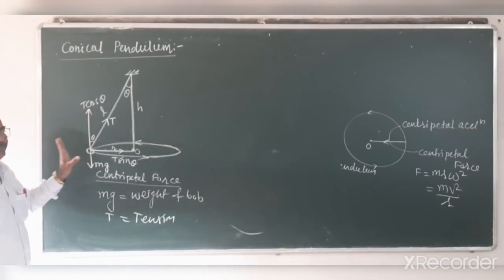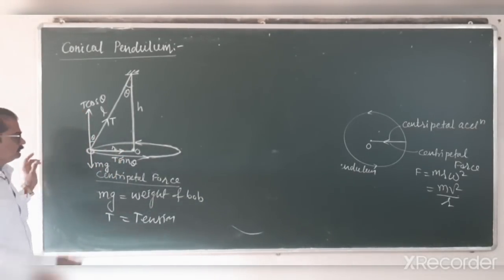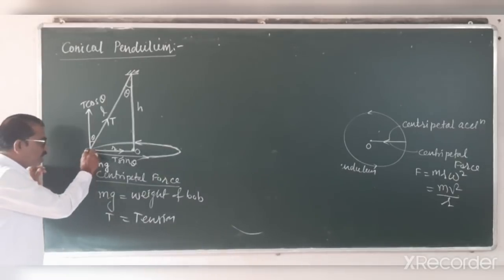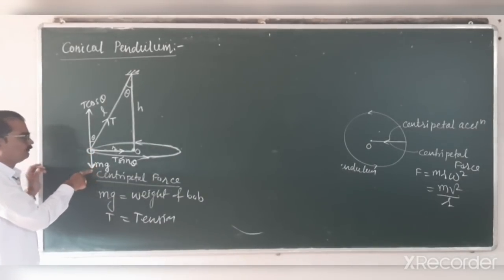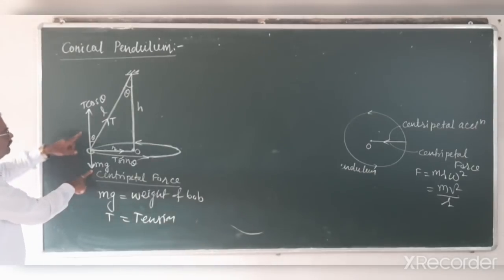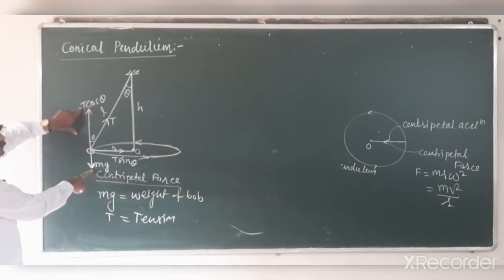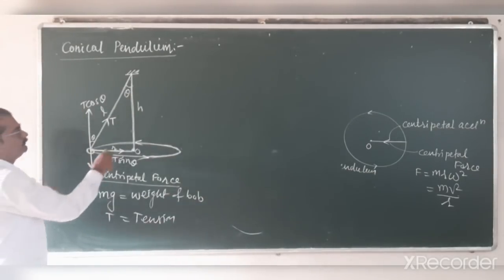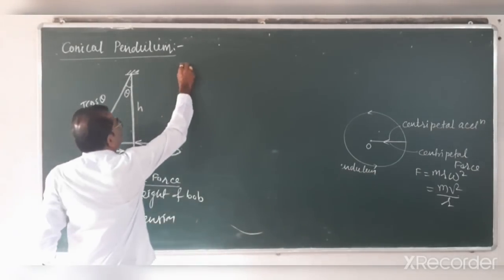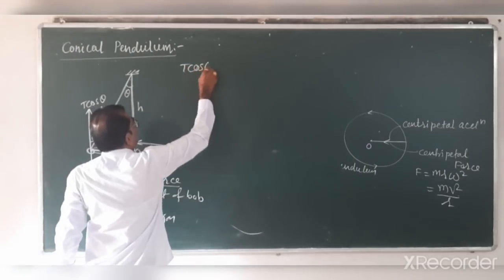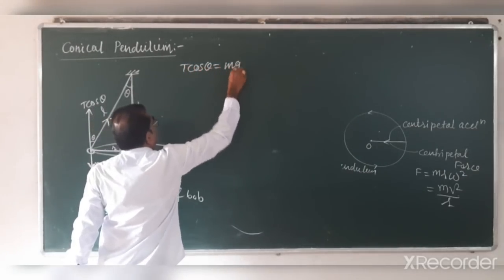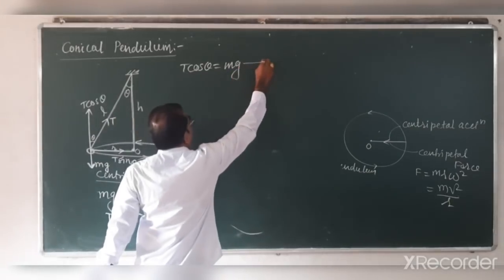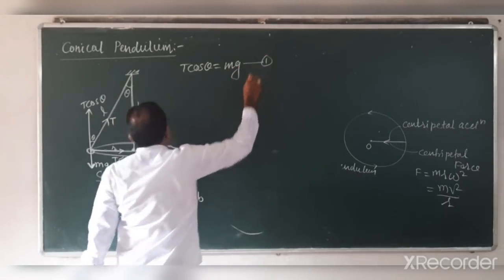From this figure, the weight of the bob — the gravitational force acting downward — is balanced by the vertical component T cos theta. Therefore, T cos theta equals mg. This is equation number 1.